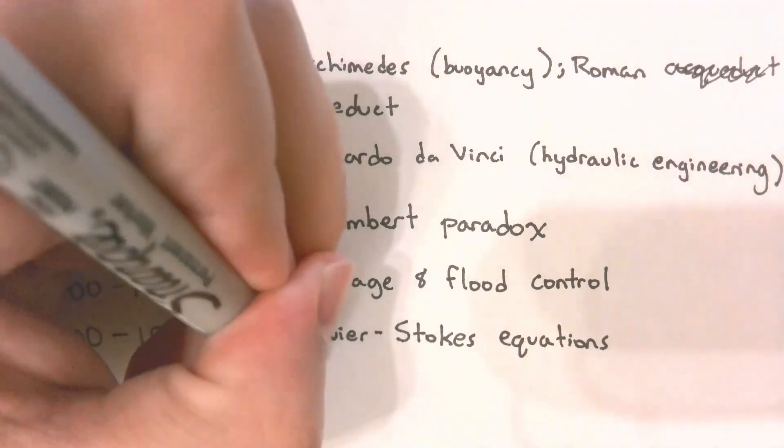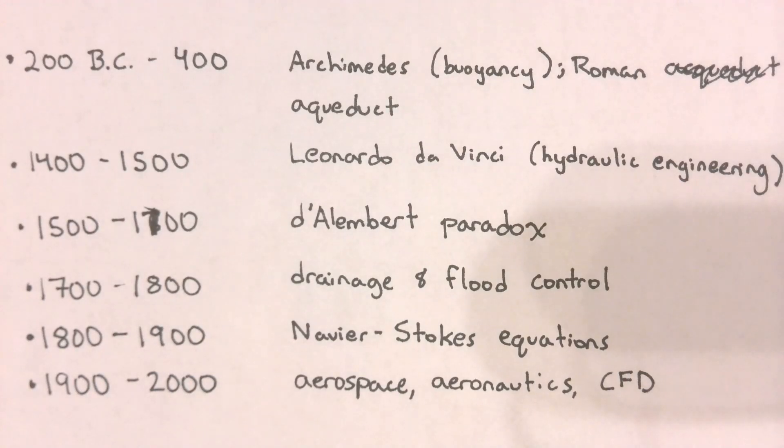In the 1900s, several developments in the aerospace and aeronautics field were made. We also saw the rise of computational fluid dynamics. Throughout this century, the field of fluid mechanics started to become more computationally dependent. That is not to say that experiments and mathematics were all thrown away. On the contrary, both experimentalists and mathematicians also continued to develop theory of fluid mechanics.